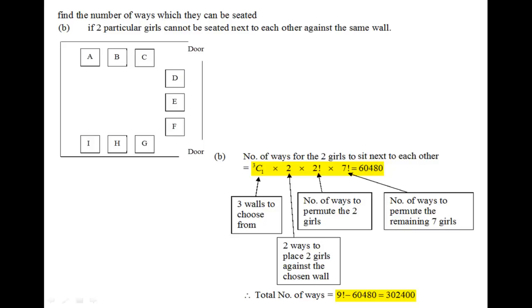Once we fix the position of these two girls, suppose we put them at the seat A, B, we can still permute these two girls around. Therefore we need to multiply the two factorial here. And last but not least, the seven factorial comes in when I already settled with the two girls and the remaining seven girls I can randomly place them on any of the seats. Therefore there's a seven factorial here. So when we multiply all the values together, eventually we'll get 60,480.